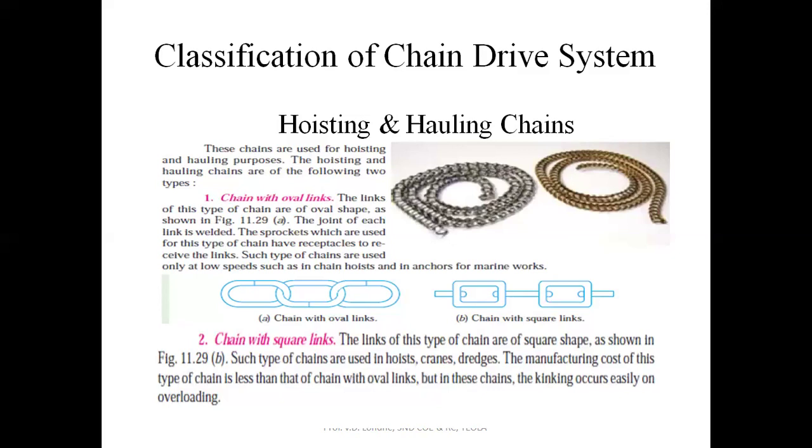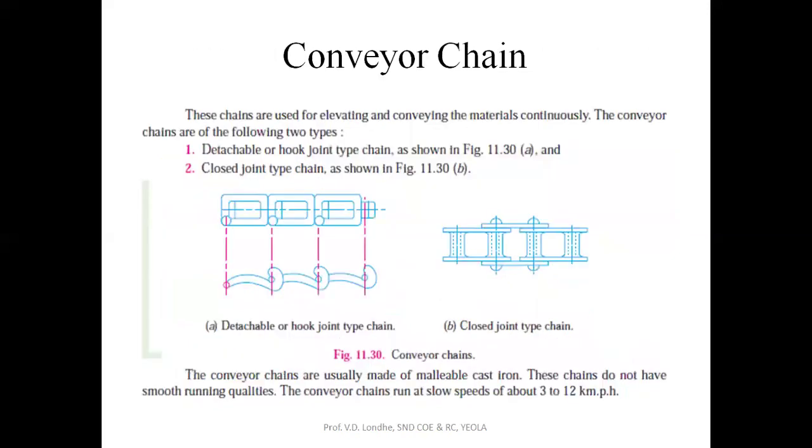Next is conveyor chain. Conveyors are used in industry to transfer products from one station to another. Conveyor chains are categorized into two parts: one is detachable or hook joint, another is closed type chain.